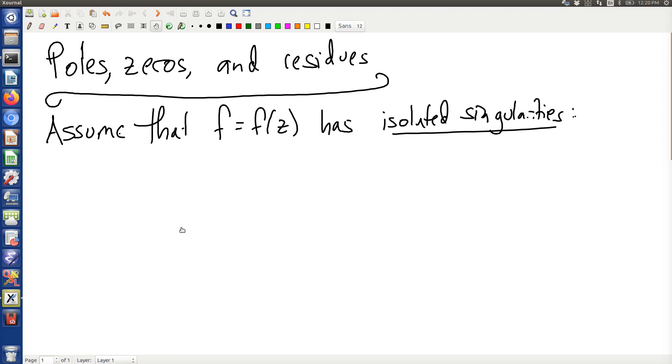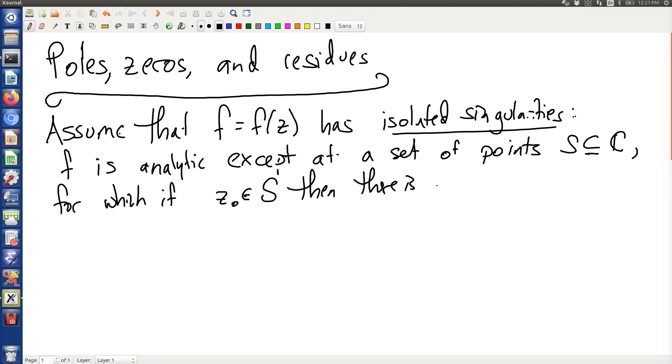What that means is that f is analytic except at a set of points S, and for which if z₀ is in S, then there is an open set containing z₀ and no other point of S.